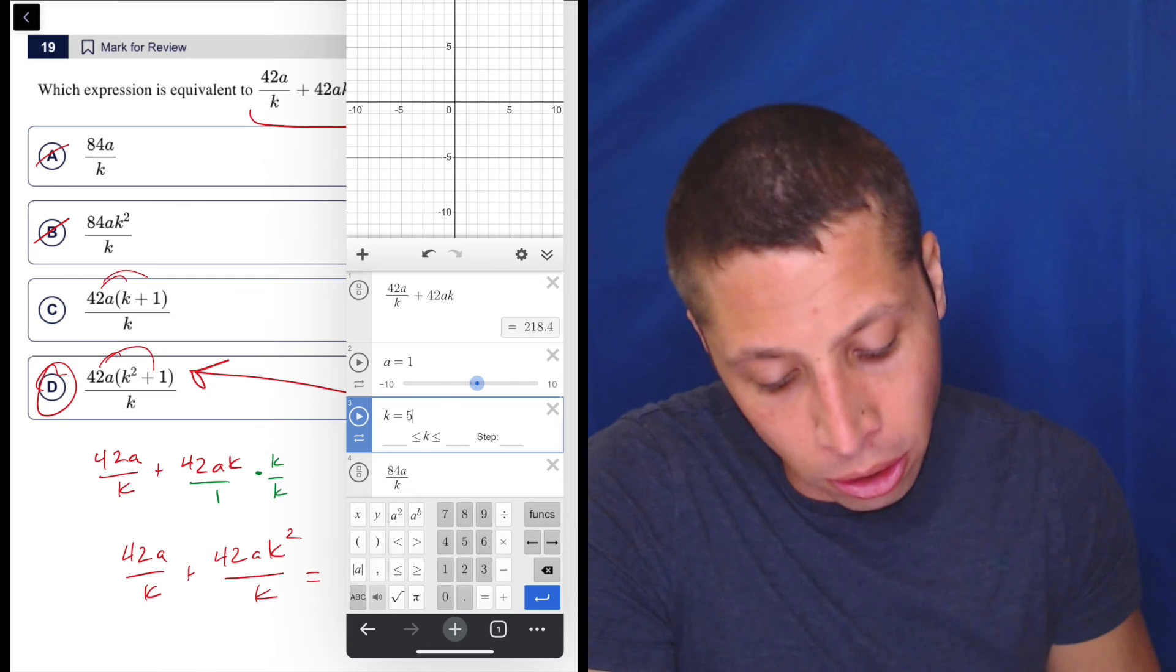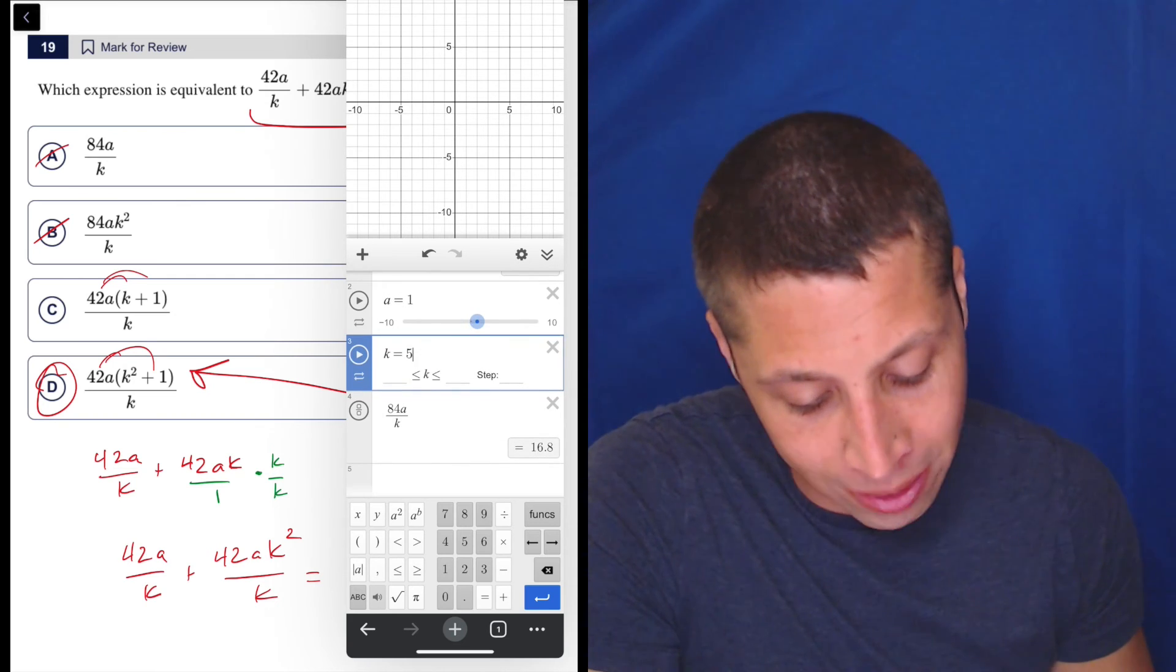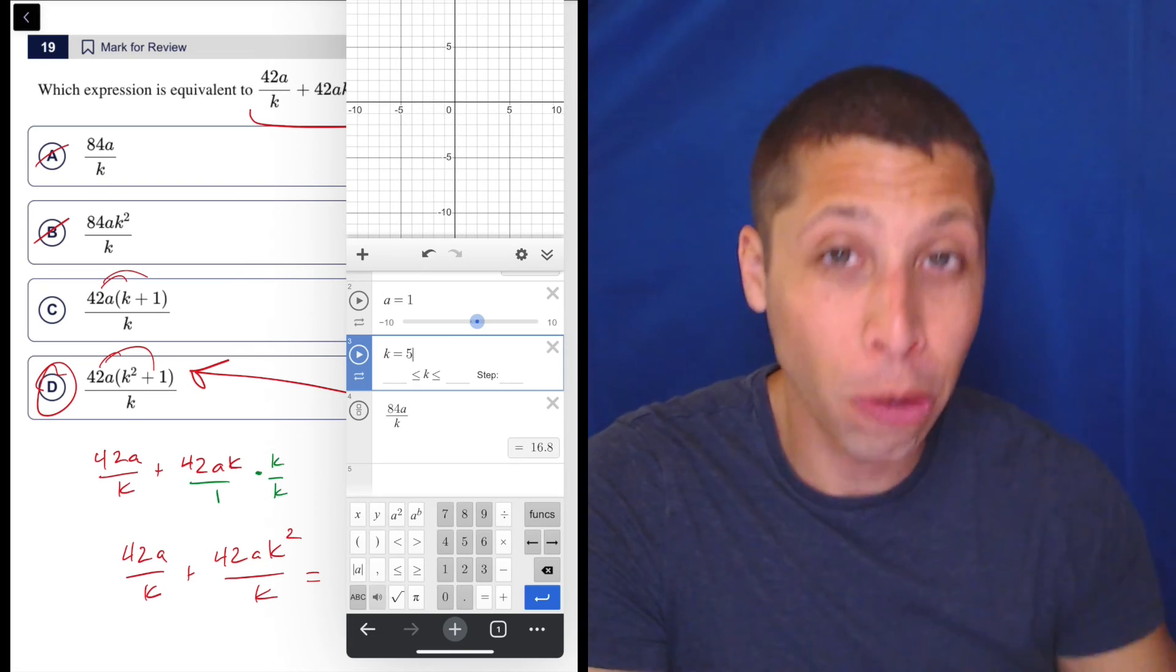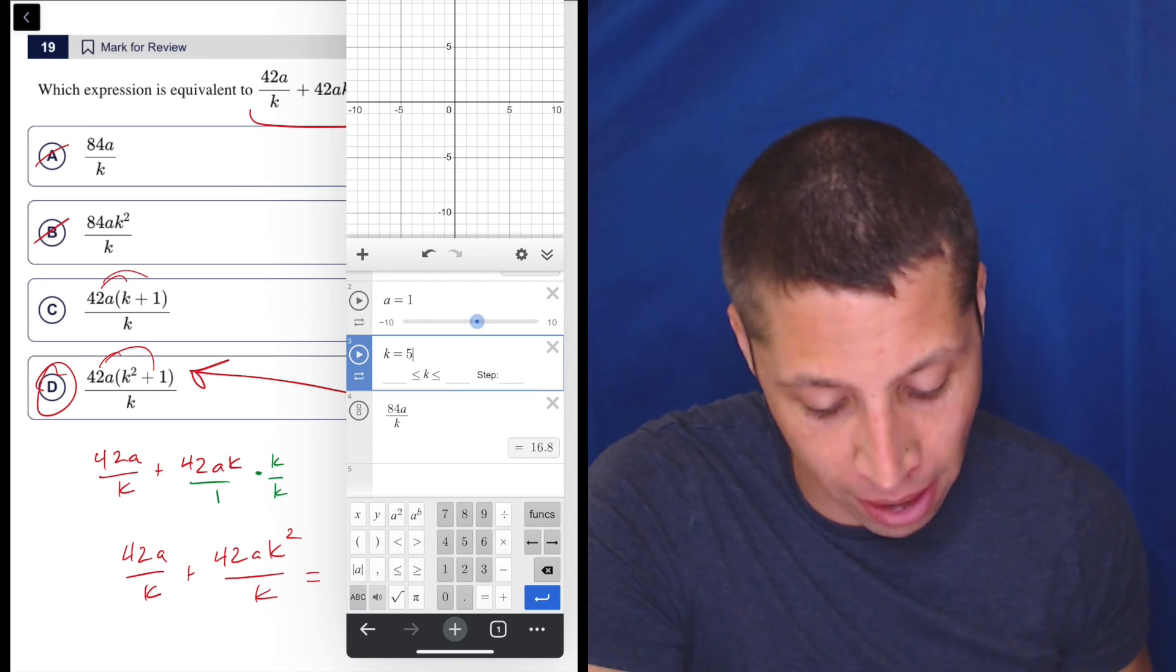And now we see a difference. Now we see our original is 218.4, and this answer choice a is 16.8. But if these are equivalent expressions, they're supposed to produce equivalent values when we plug the same values in.